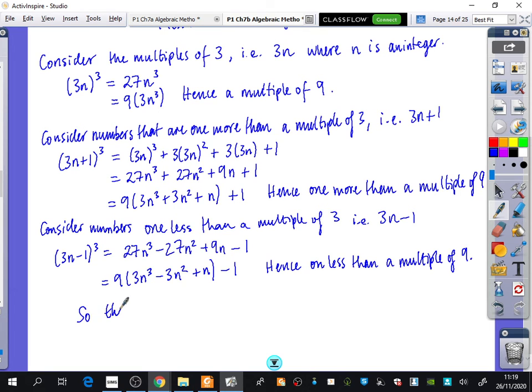So the statement is true. Because it is true for multiples of 3, 1 more than a multiple of 3, and 1 less than a multiple of 3, it is either a multiple of 9, 1 more than a multiple of 9, or 1 less than a multiple of 9. The statement is true.